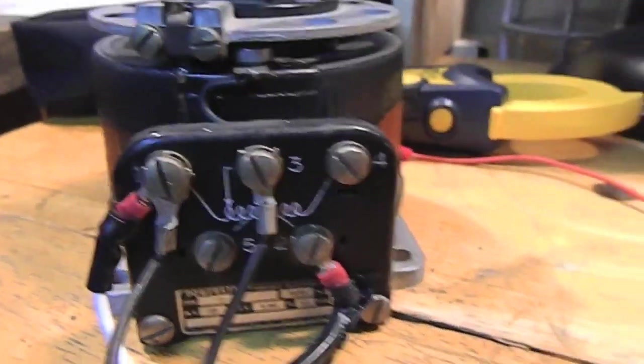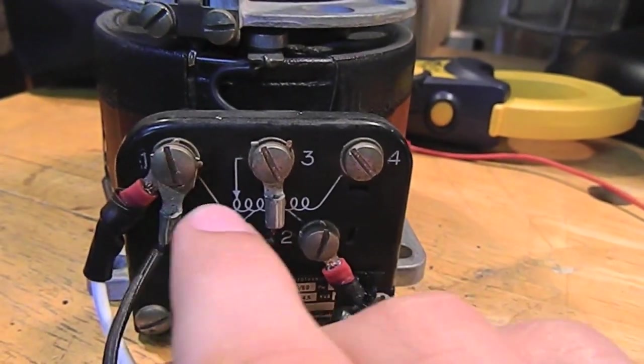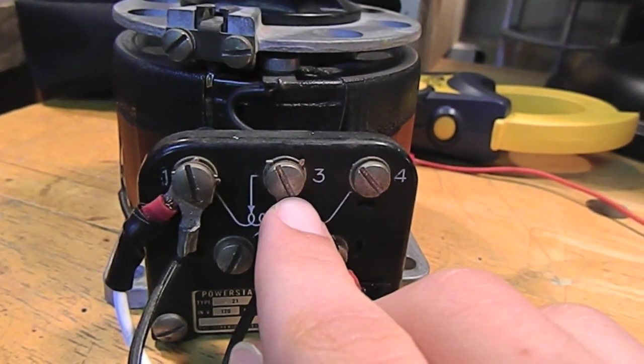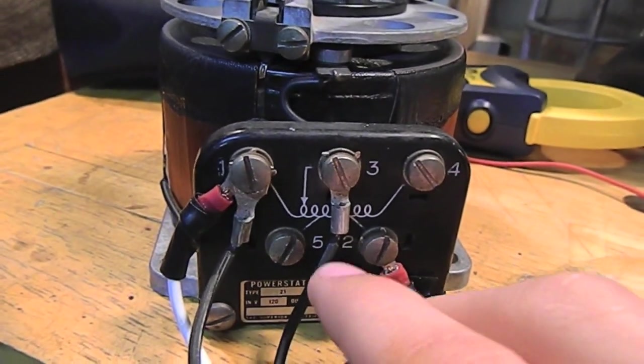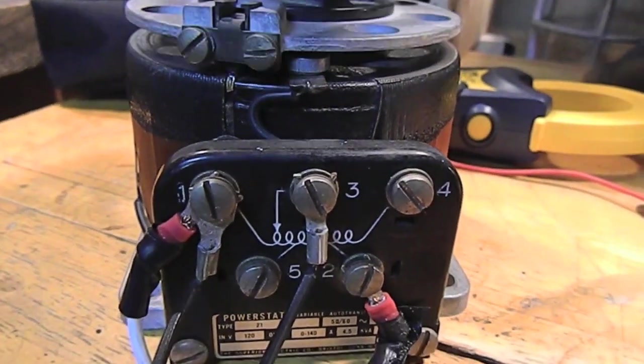Now, to get your line out, you share a common neutral, and the brush is your hot output. So, share a neutral and hot. That's all for the output.